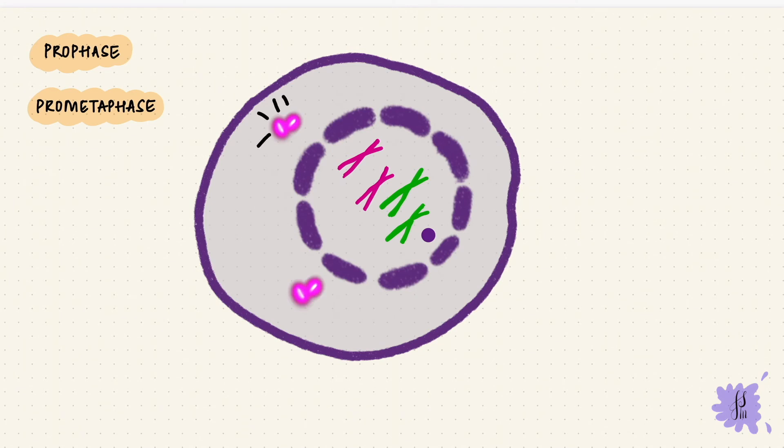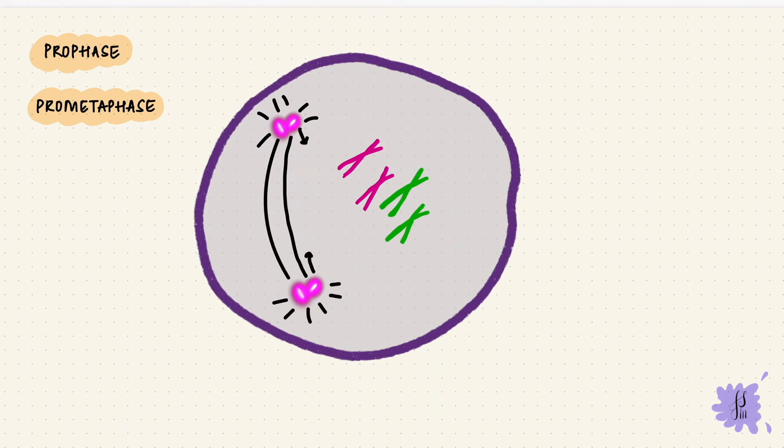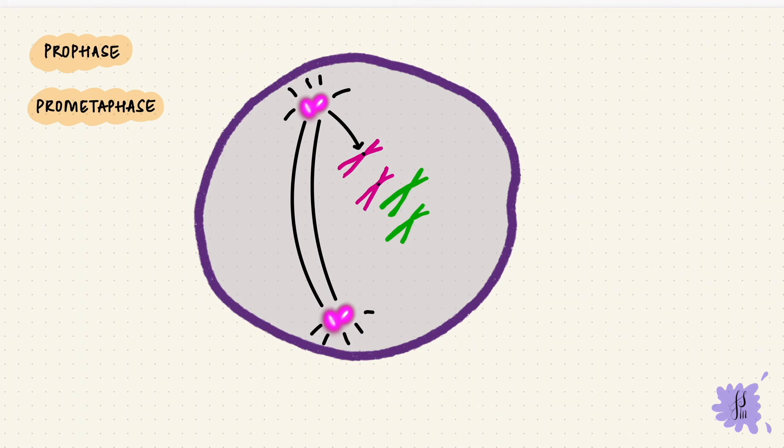Now during this phase, the microtubules that are forming from the asters are going to fragment the nuclear envelope. So they're going to attach to the centromere of the sister chromatids. The point at which they attach is called a kinetochore.